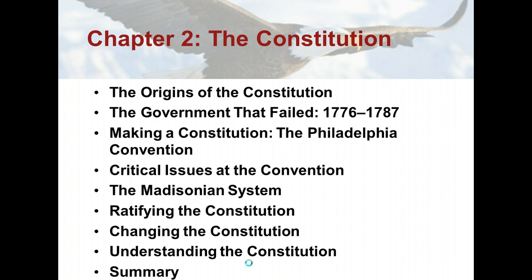We're also going to contrast the Federalists and the Anti-Federalists in terms of their background and their positions regarding government. We're going to explain the various routes to formal amendment of the Constitution and how the Constitution changes informally. And we're going to explain whether the Constitution establishes a majoritarian democracy and how it limits the scope of government. We might not get to all of these objectives here in one video — we may have to break this up.